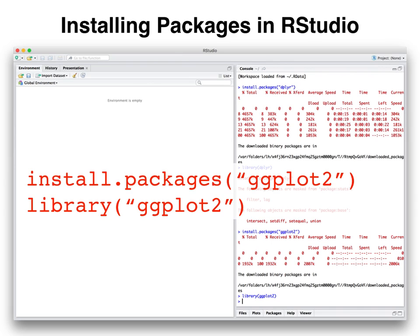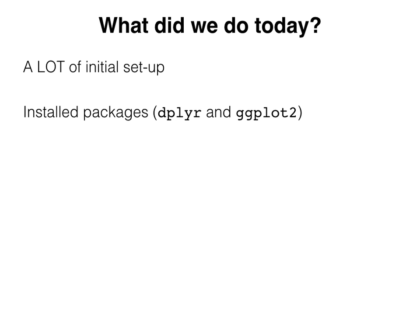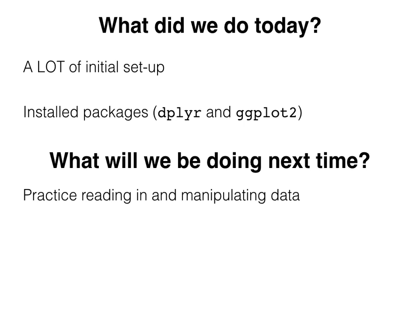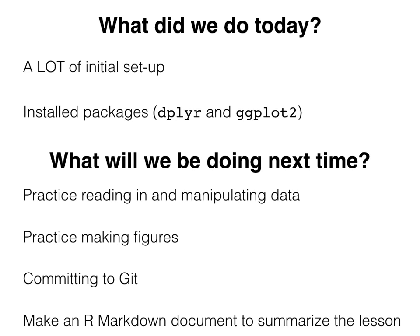Congratulations, you've completely set up your computer to be ready to go for the course. To summarize what we did today: you successfully configured git, connected git to your RStudio, created an SSH key for RStudio, added that SSH key to Bitbucket, and installed the packages dplyr and ggplot2. Next time we're going to practice reading in and manipulating data, making some figures with sample data, committing changes to git, pushing up to Bitbucket, and making an R markdown document to summarize the lesson. I hope you've enjoyed this first lesson and are looking forward to the next one.